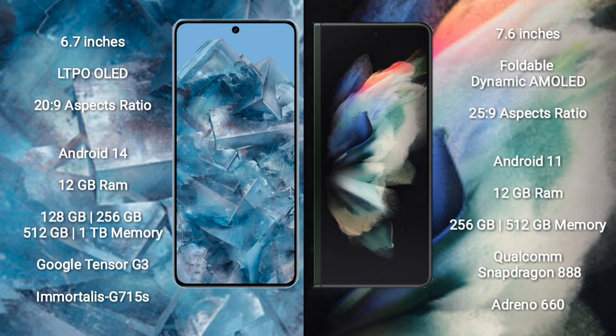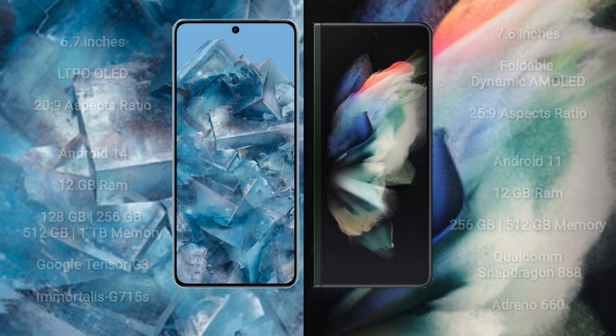Samsung Galaxy Z Fold 3 comes with 12GB RAM and 256GB or 512GB internal storage. It is powered by the Qualcomm Snapdragon 888 processor with GPU 660.